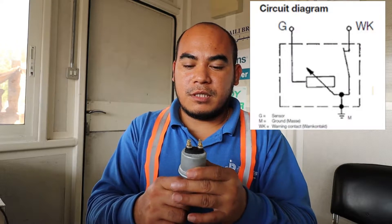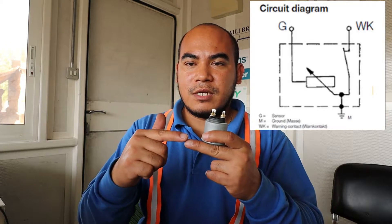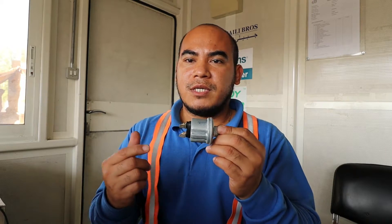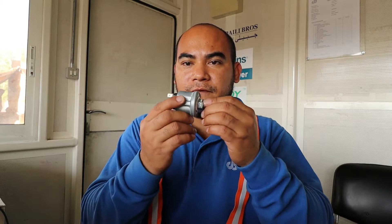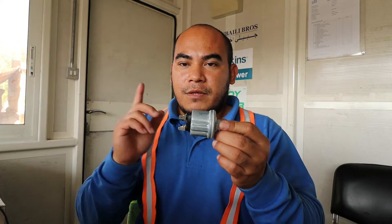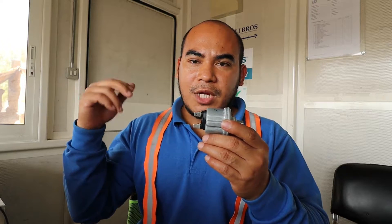The switch is different. The switch is a single path, so meaning once it is closed, it will directly give you the negative signal going to your module. Once it is attached to the engine body — and the engine body is already grounded, with the negative connected from your battery — there is already a negative supply. Once the switch is closed, it will give directly a negative signal to your module.